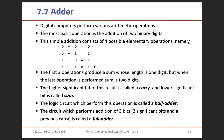The most significant bit of this result is called carry and the least significant bit is known as sum. So if you have two bits, one bit is carry and one bit is sum. For example, if you take 0 plus 0, the answer is 0, which means your carry is 0 and sum is 0.